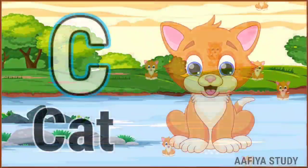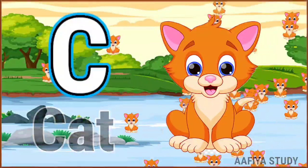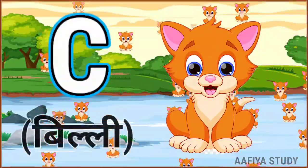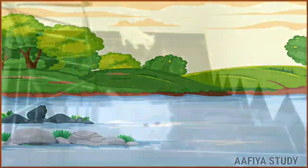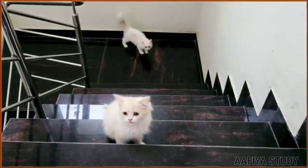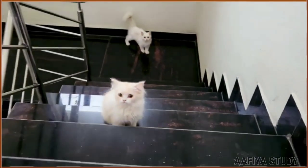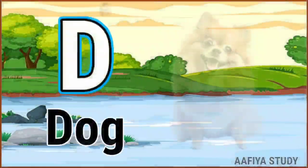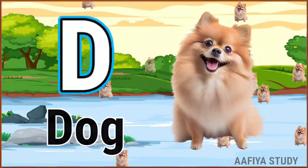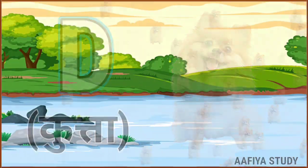C for cat, cat means play. D for dog, dog means kutta.